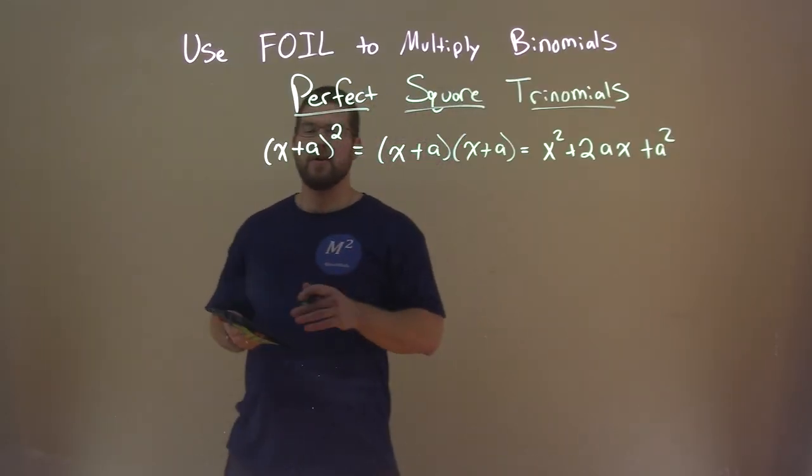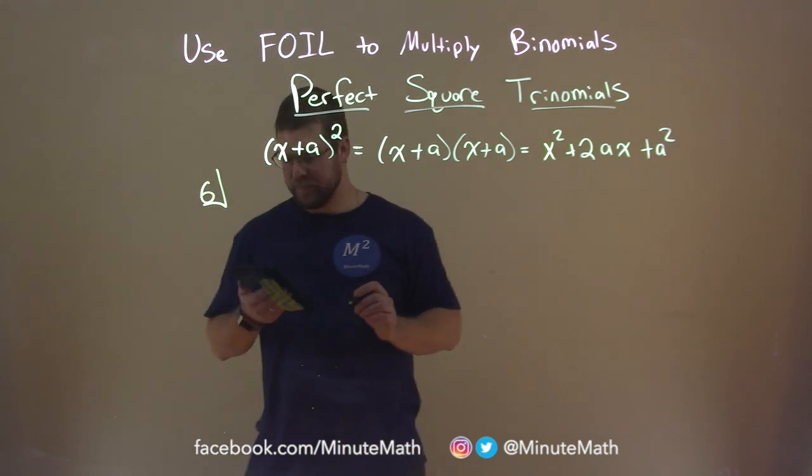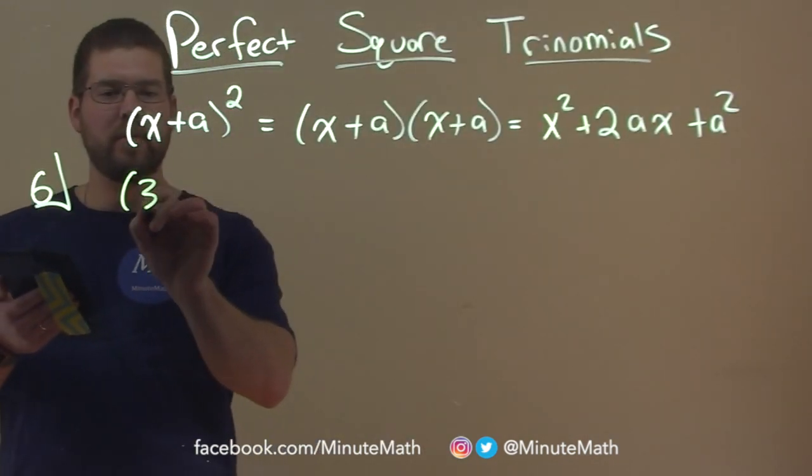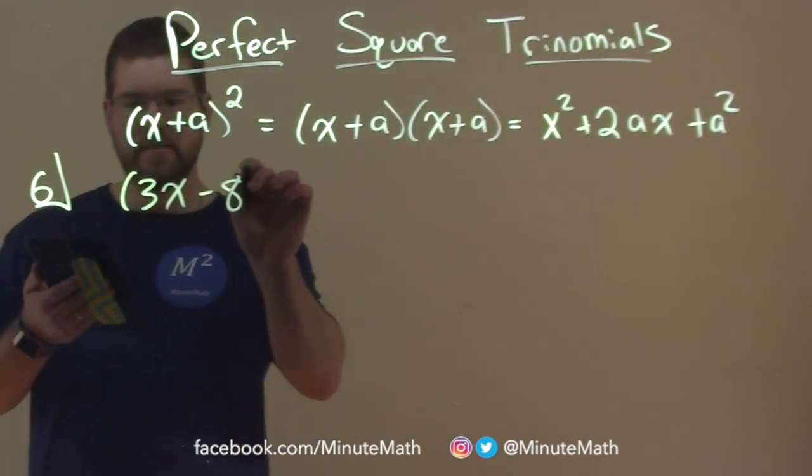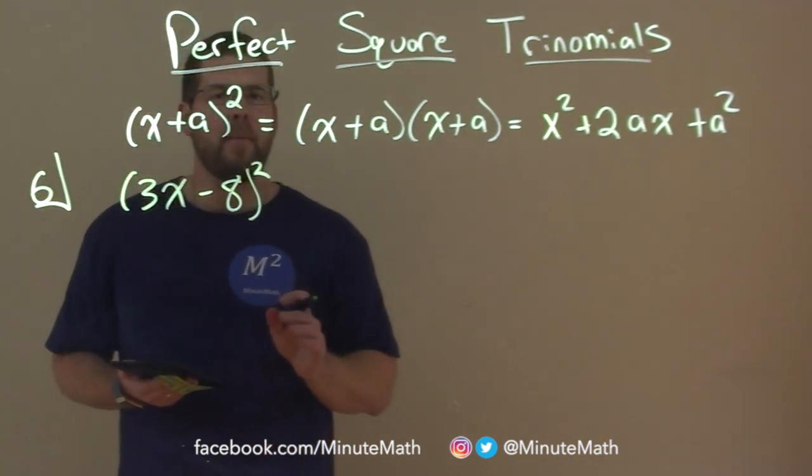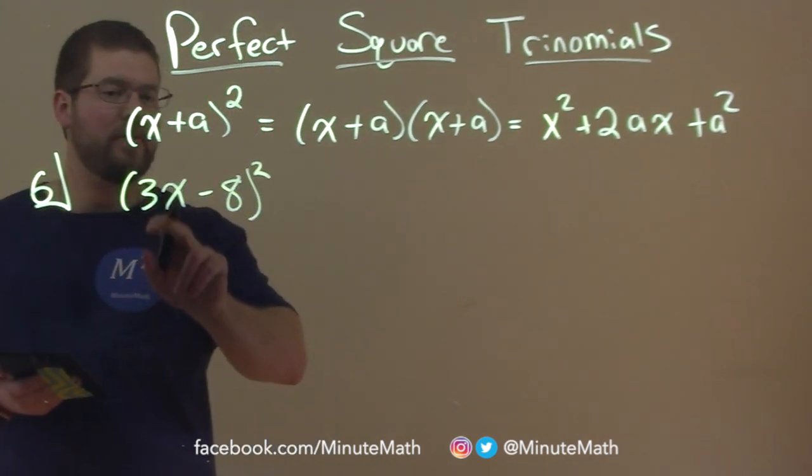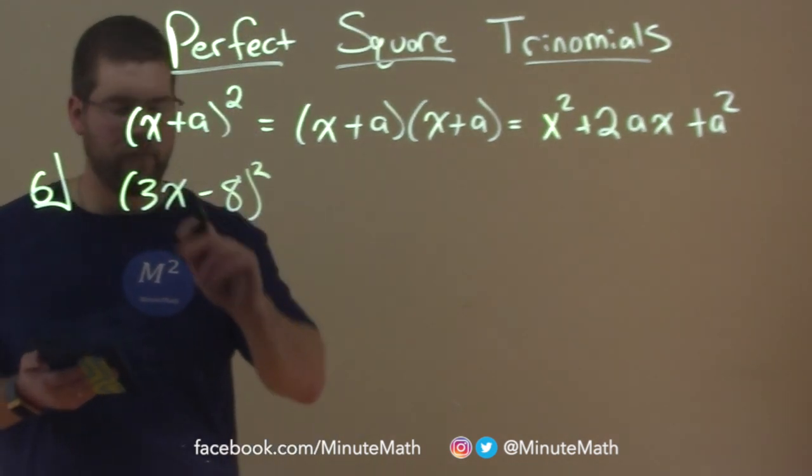Let's dive in with an example. Let's go to example 6 here. Let's say I was given (3x - 8)². That whole thing squared. Now, be careful with our formula here. Our x is represented by 3x - it's the whole first term.